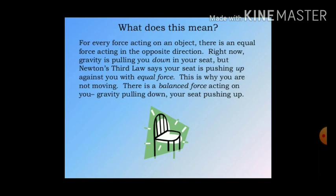Inertia of rest is the tendency of an object to resist any change in its position of rest. If any object is at rest, it wants to remain at rest — if any external force is applied, it will try to oppose it and continue its state. Inertia of direction is the tendency of an object to resist any change in its direction of motion — any object moving in a direction wants to continue moving in that direction.